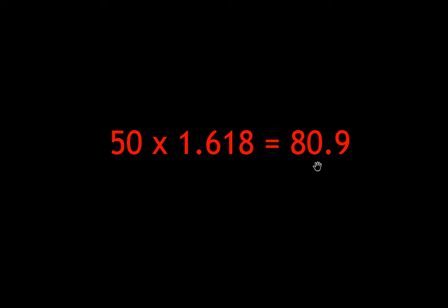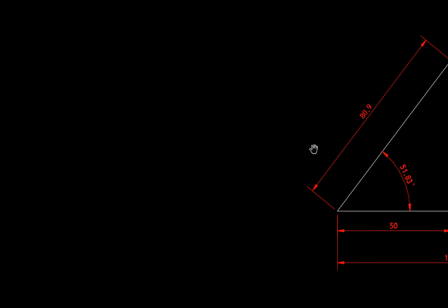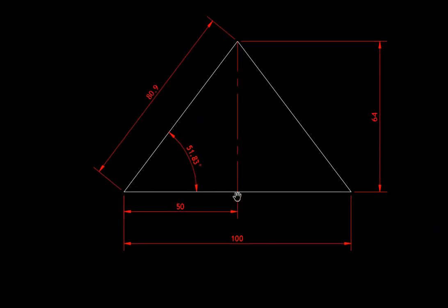Now remember those two numbers there. Now I'm going to try and apply that to a triangle. And this triangle here, I'm going to make the distance from the center to there 50, and I'm going to make that distance there 80.9. So there's my 1 is to 1.618. And when I've created that triangle, if I go measure that angle there, it's 51.83 degrees. Now that number there might look familiar to you, or that shape might look familiar to you, because it's actually the shape of a Giza pyramid.